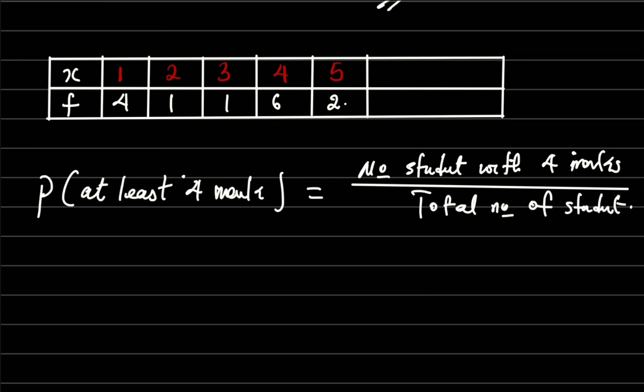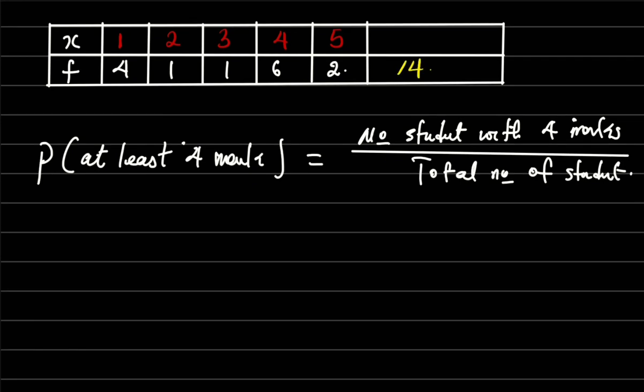Now since we've calculated our x, total number of students means summation f. Now if you check it out, our summation f, we have 4 plus 1, that is 5, then plus 1 is 6, plus 6 is 12, plus 2 is 14. Now the students that scored at least 4 marks means 4 and above. If you check, they are just this and this, so they are 8.